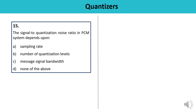Question 15: The signal-to-quantization noise ratio in a PCM system depends upon — sampling rate, number of quantization levels, message signal bandwidth, or none? The SNR depends upon the number of quantization levels. This is the correct answer — B.